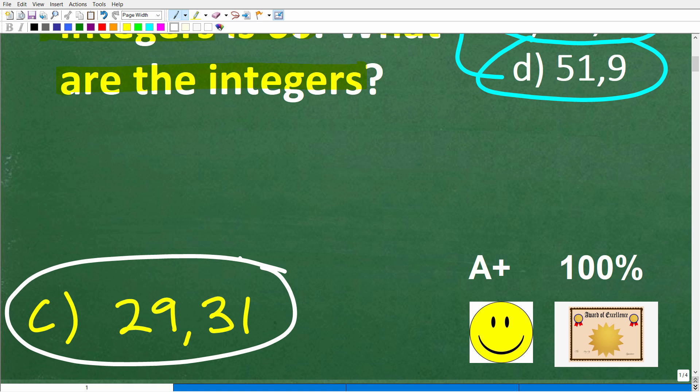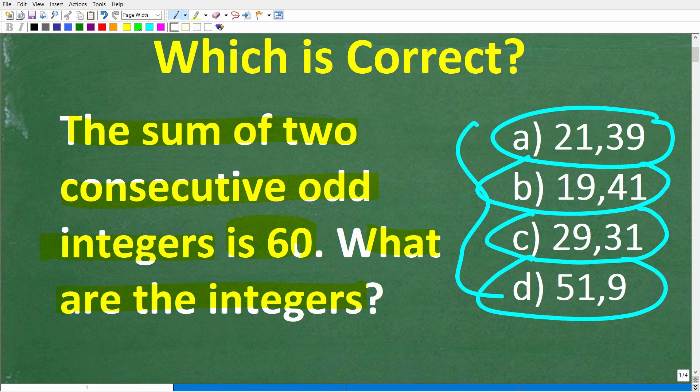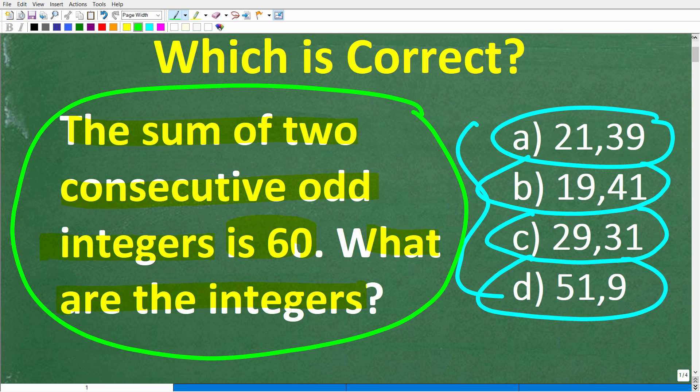All right. Now, if you got this right, you definitely get a happy face, an A plus, a 100 percent, and a certificate of excellence for being able to solve a very typical type of algebra word problem.